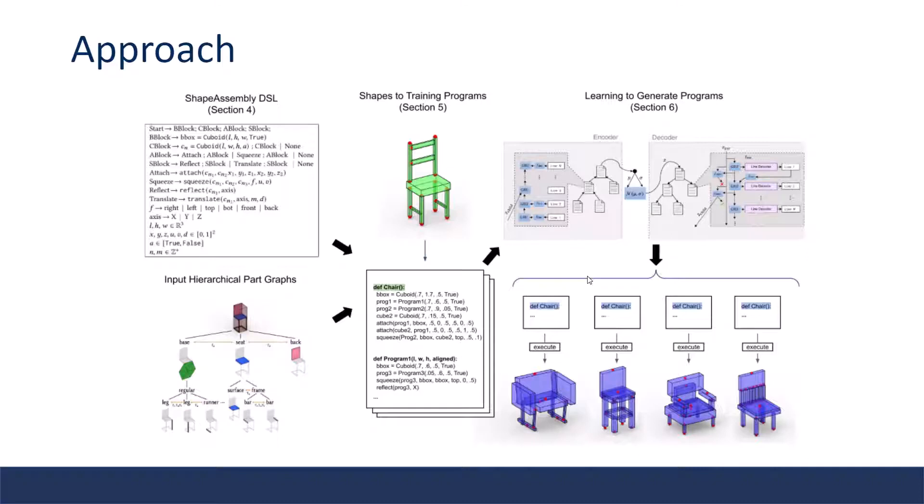The first is to define the language Shape Assembly. The input of the pipeline is a large dataset of hierarchical 3D part graphs. Nodes are connected via edges that denote the physical part attachment. They can also be connected via edges that denote hierarchy relationships. At the leaf level, atomic parts are represented by cuboid bounding geometry. The pipeline extracts the Shape Assembly program from them. Finally, this extracted program will be the training data for the deep generative model, and the model learns to generate novel shape programs.